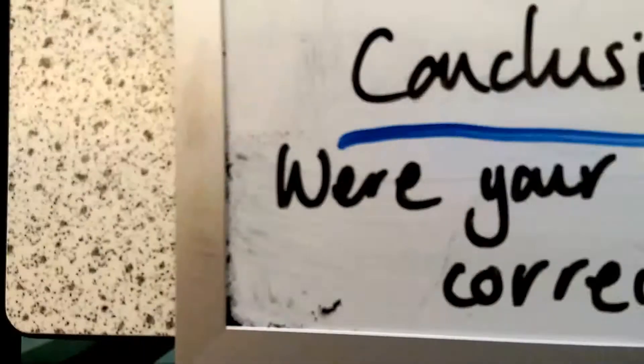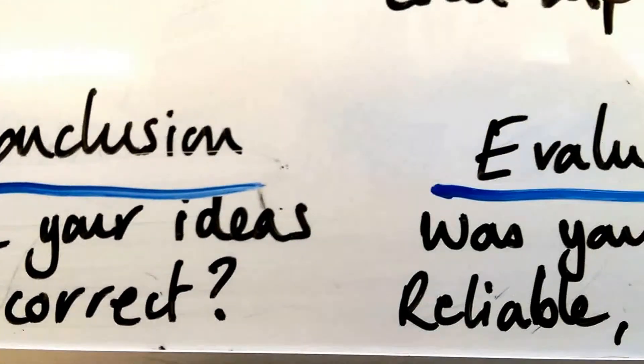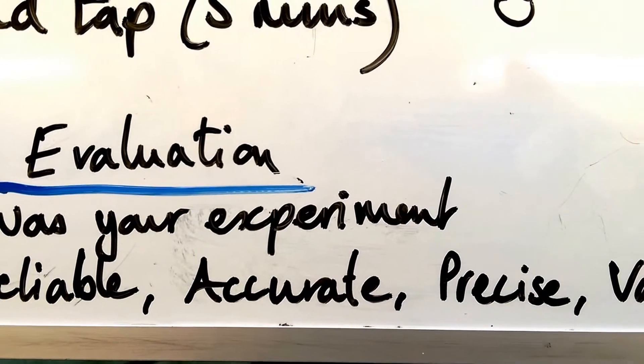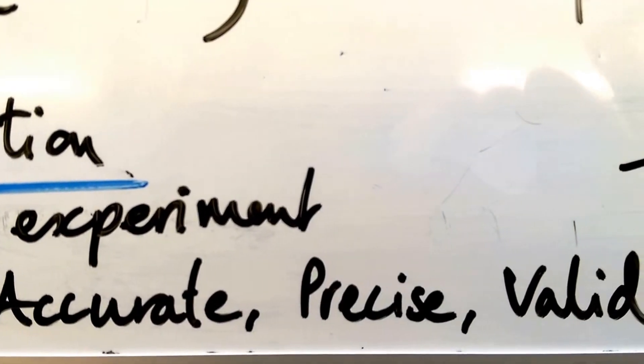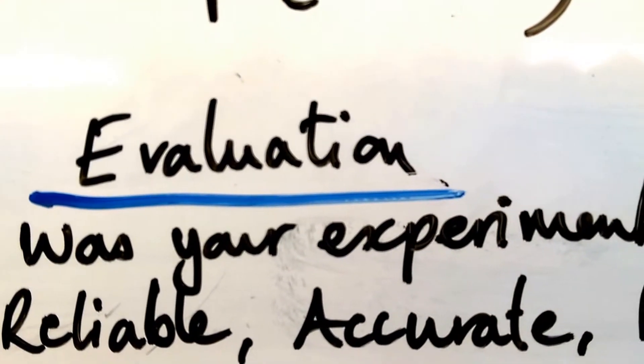Lastly, write yourself a conclusion. Were your ideas correct? Then, evaluate your work. Was your experiment reliable, accurate, precise, and valid? What's the value of your experiment? E-valuate.